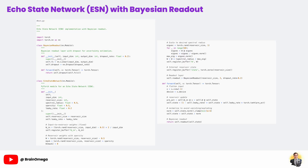This is a critical step. Setting the spectral radius properly makes sure the reservoir's activity is neither too explosive nor too forgetful, so it can maintain meaningful echoes of past inputs for the agent to learn from.